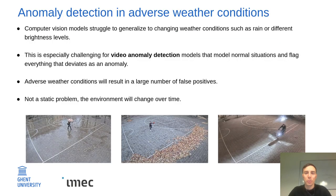Adverse weather conditions are challenging for any computer vision algorithm, but especially for anomaly detection, because the goal of anomaly detection is to detect deviating situations that are different from the situations that were seen during training. So if the model is deployed in the real world, it will generate a lot of false positives.